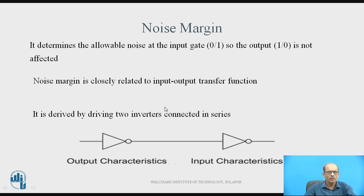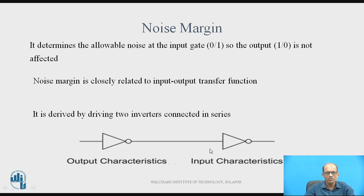What is the Noise Margin? For understanding the Noise Margin, we have taken the example of the cascading of two CMOS Inverters. This is one inverter and this is the second inverter. The output of Inverter 1 is connected to the input of Inverter 2, as shown in the figure. This Noise Margin determines the allowable noise at the input gate so that the output is not affected.